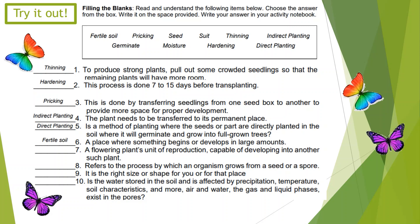Number 7: A flowering plant's unit of reproduction capable of developing into another such plant. The correct answer is seed.